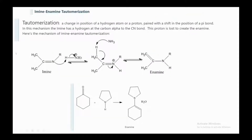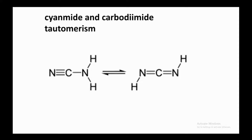Imine–enamine tautomerism: the imine picks up a proton and tautomerizes into the enamine. The enamine has a carbon single-bonded to nitrogen and carbon double-bonded to carbon, whereas the imine has carbon double-bonded to nitrogen. In the mechanism, the imine has a hydrogen at the carbon alpha to the C=N bond; this proton is lost to generate the enamine.